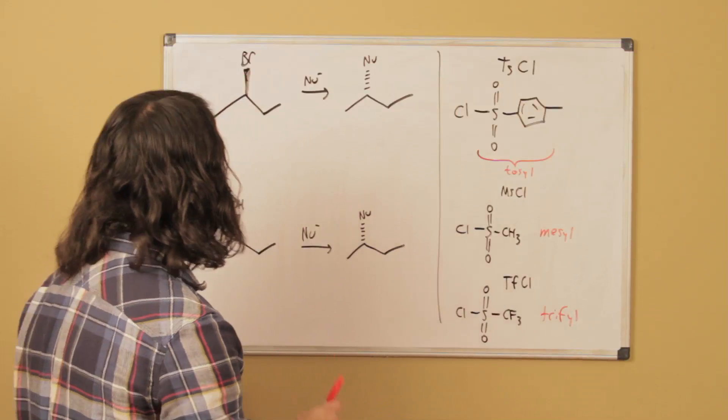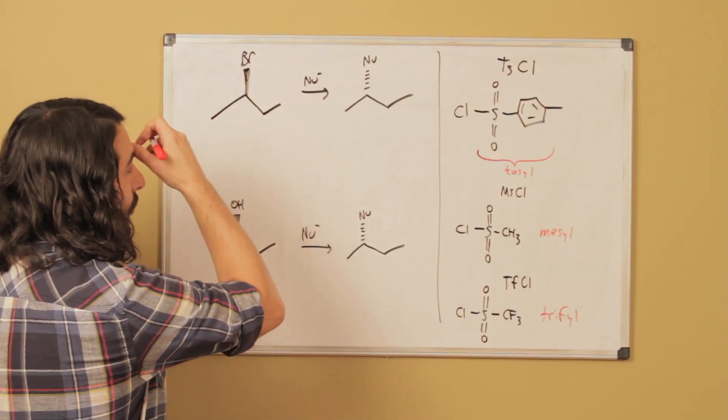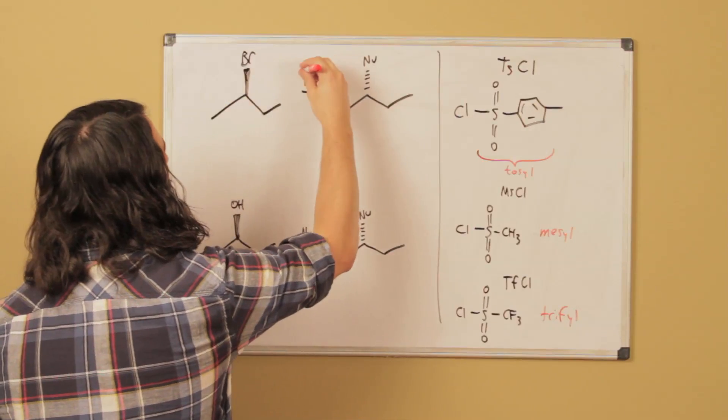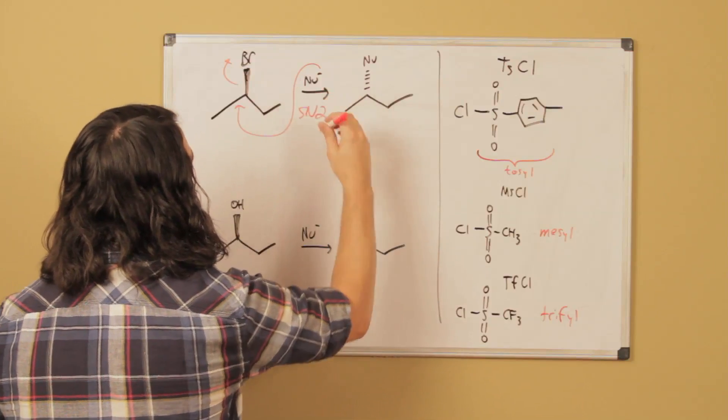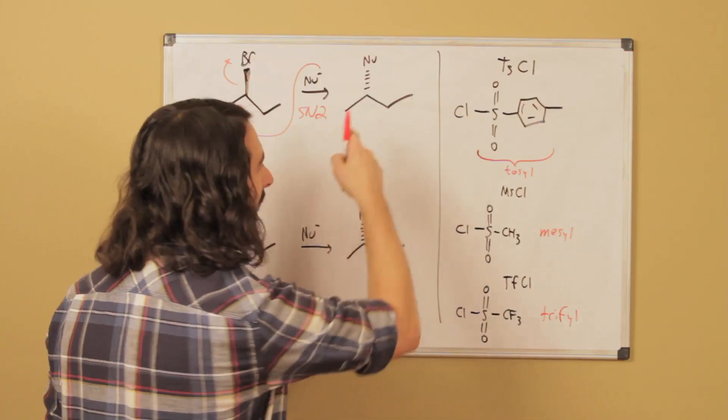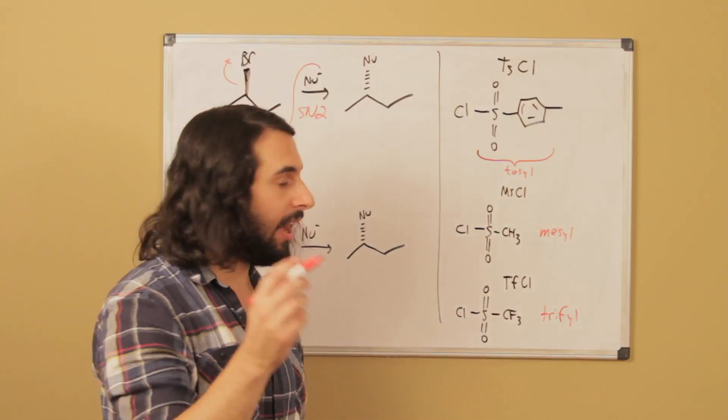Let's go back to the SN2 reaction. We know that we have an alkyl bromide that might react with a nucleophile and do SN2. We're going to get inversion of stereochemistry and that's going to work just fine. However...